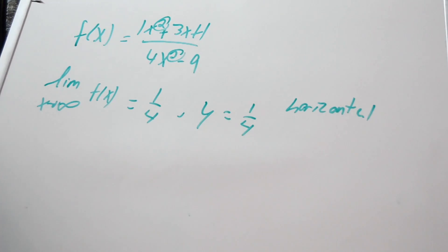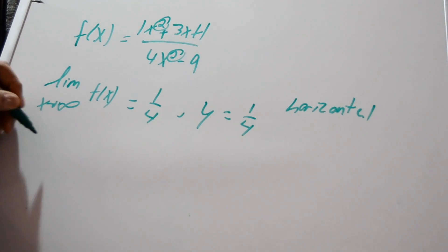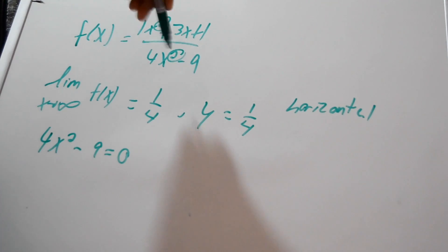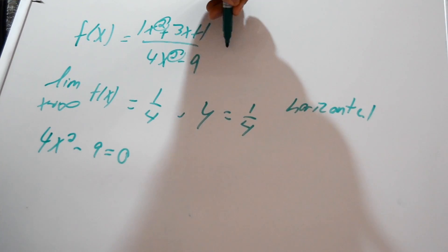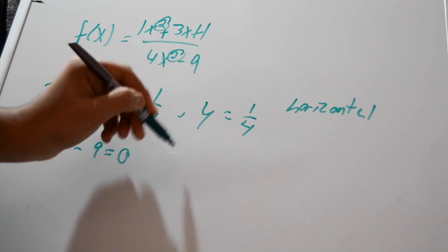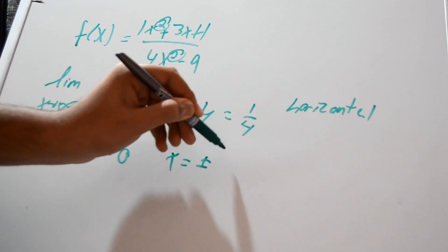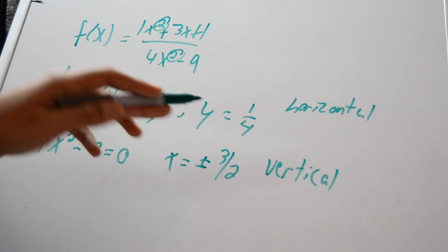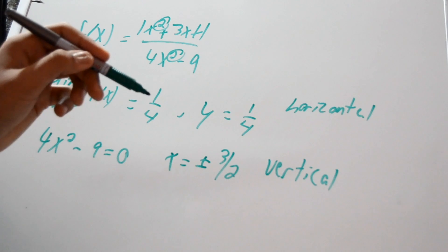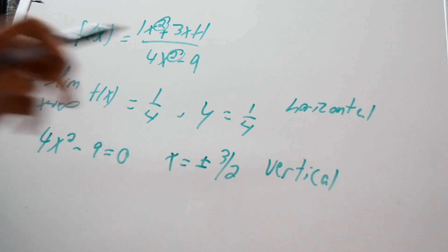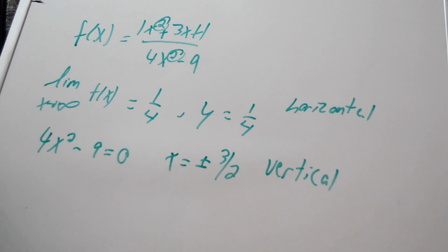For the vertical asymptotes, we set the denominator equal to zero: 4x² − 9 = 0. Solving for x gives x = ±√(9/4) = ±3/2. So when we graph this function, we have a horizontal asymptote at y = 1/4 and two vertical asymptotes at x = +3/2 and x = −3/2 — two vertical, one horizontal.